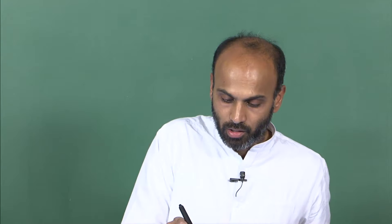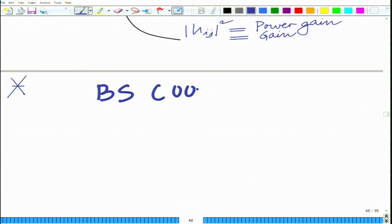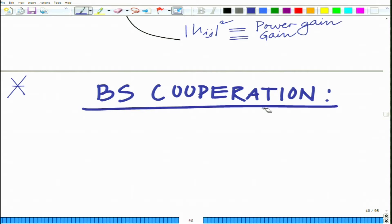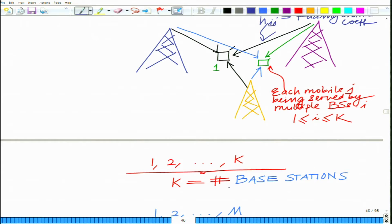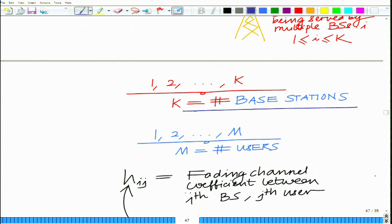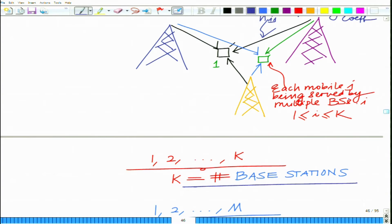Welcome to another module in this Massive Open Online course. We are looking at a wireless base station cooperation scenario in which several base stations are cooperating to transmit to a single user or a group of users. In base station cooperation, we have k base stations cooperating to transmit to m users. These users are located at the intersection of various cells and can be served by multiple base stations, so the base stations cooperate to enhance the signal-to-noise power ratio at each user.